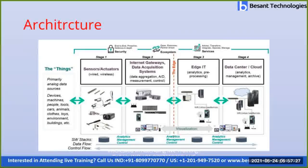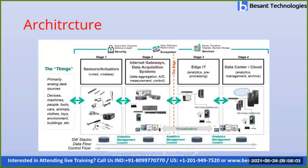The internet gateway is not limited to only internet — it may be any kind of connecting device such as Bluetooth, Zigbee, or anything else. Although IoT stands for Internet of Things, we can connect two devices with any connecting gateway — it may be internet, GSM, or whatever. In stage three, the sensor data is collected, processed, and analyzed, since it collects a huge amount of data that needs to be pre-processed and analyzed.